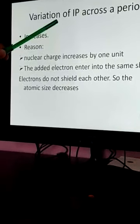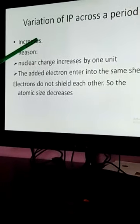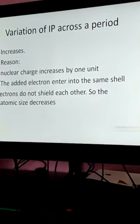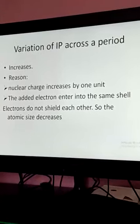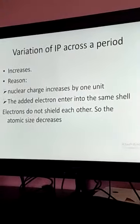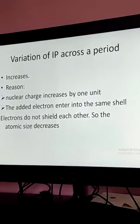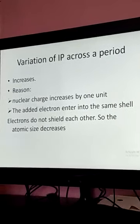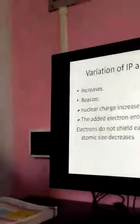As a result, ionization potential across the period increases. That means, when the atomic size decreases, ionization potential increases. That means, there is a tremendous amount of energy required to remove the electron. There is a lot of strong pull between the nucleus and the electron. So, as a result, it needs a tremendous amount of energy. Therefore, ionization potential increases across the period.